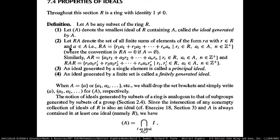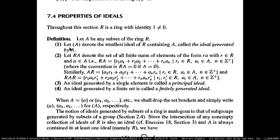You have a ring that has the identity, and then you consider a subset of the ring. For the subset of the ring, you can have four different things. The first one is you can generate an ideal from this subset, which is denoted by this subset around the parenthesis, and it denotes the smallest ideal of the ring which contains this subset. This is called the ideal generated by the subset A.